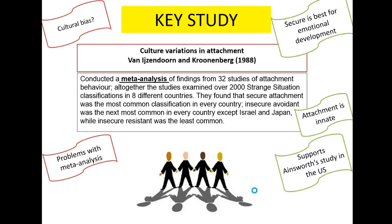Obviously there are problems with meta-analysis. The main problem is that each of the studies may not have used the same designs, so conclusions may be off when comparing them — if the studies aren't the same type, it's not really a fair comparison. There is also cultural bias: the strange situation procedure was devised in America, but it's being used to assess other countries. For example, German culture doesn't really like clingy babies — they prefer more independent babies. If you use the strange situation on German babies, you'll find they appear insecurely avoidant, which may not actually be correct from their cultural point of view. So we have to be really sensitive to cultural bias.